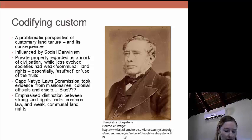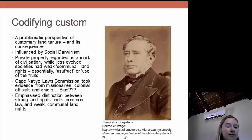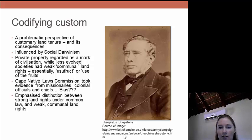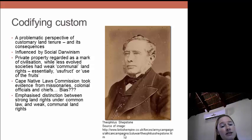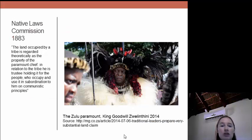Another thing that influenced the codifying of customary land tenure was the Cape Native Laws Commission of 1883. How did the British try to figure out what customary land tenure meant and what its characteristics were? They took evidence from white missionaries, senior colonial officials, and chiefs. There's a question here: is this maybe a bit biased? Do we have a group of people who are going to give quite a one-sided view of what customary land tenure is?